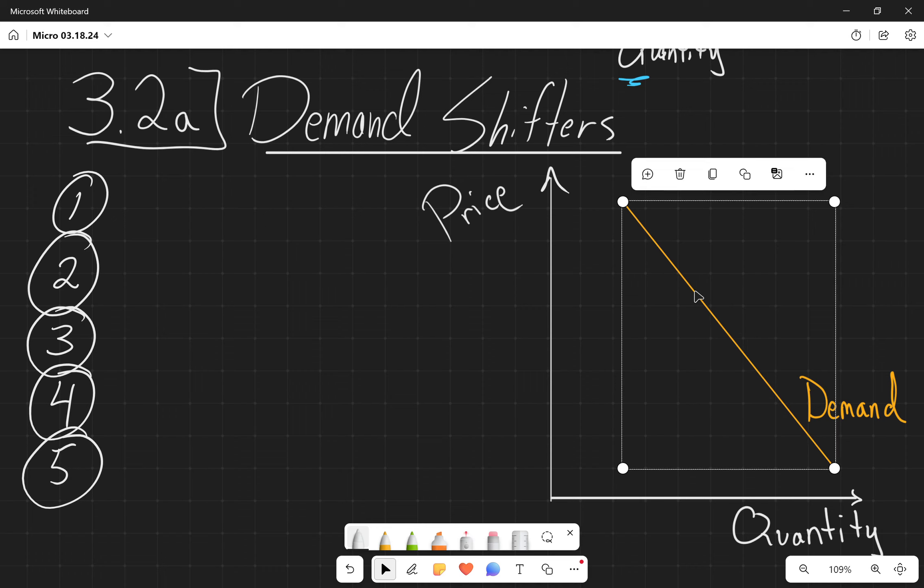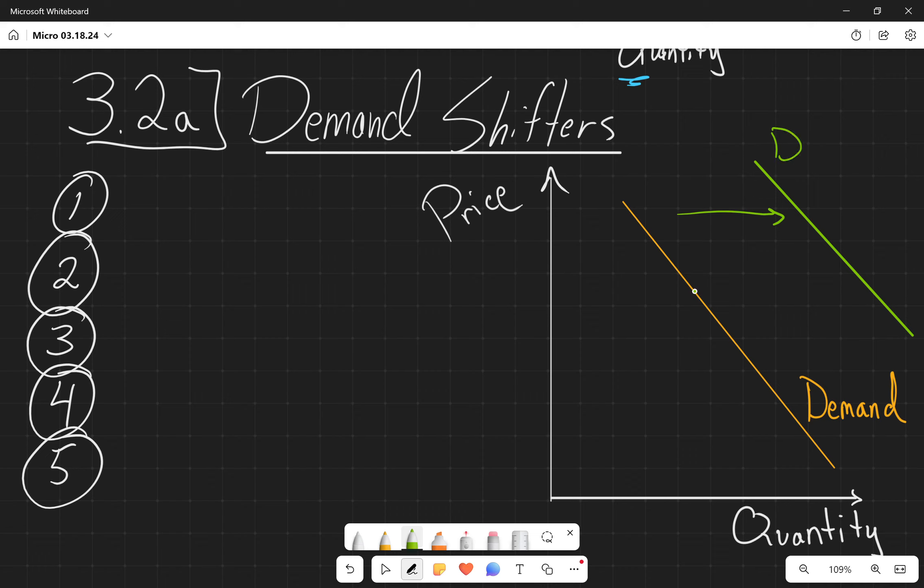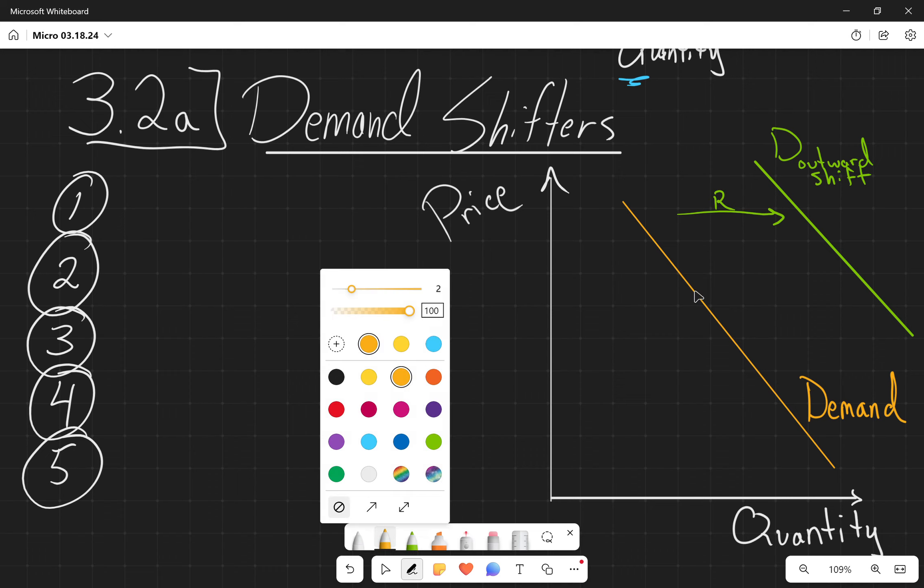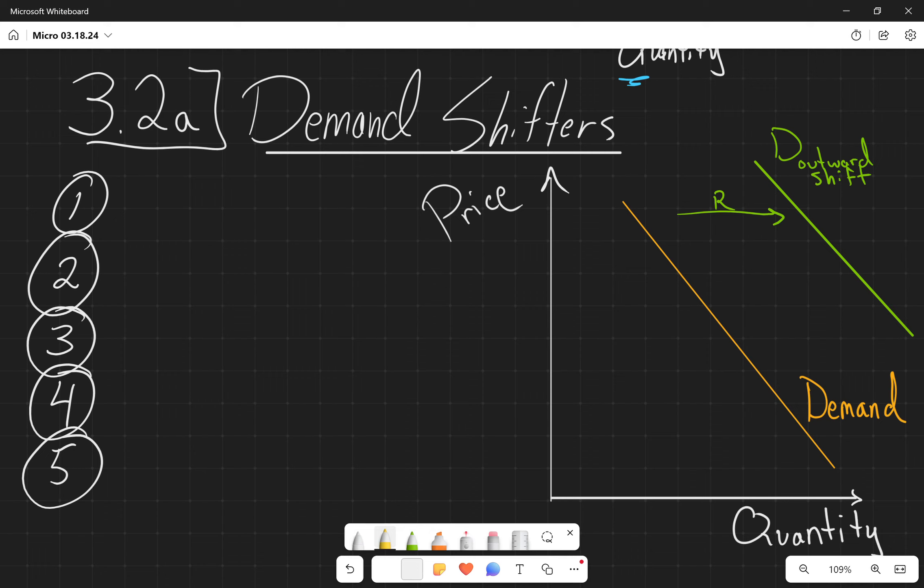And the way that we represent that is we would have, we'll use a green line to represent a movement outwards. So we'll talk about outward shifts, or we also might talk about shifts to the right compared to a shift to the left, which we'll use the yellow line to signify.